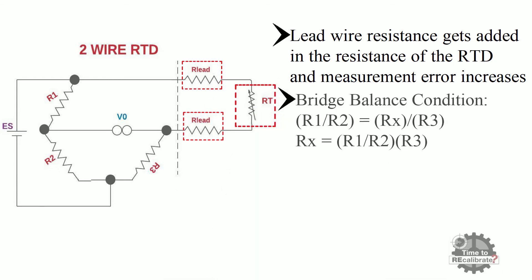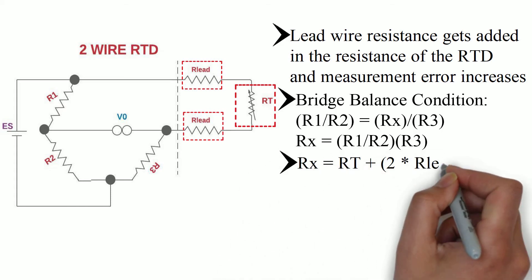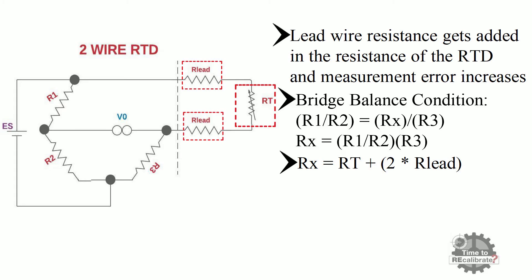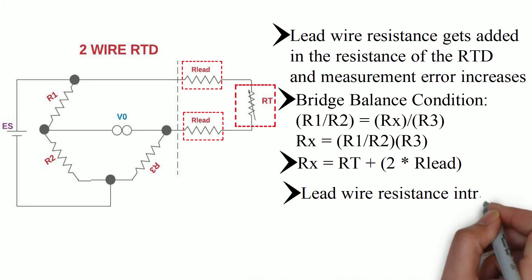As you can see, this is the equation of Wheatstone bridge when it is in balance condition. In this equation, Rx is the sum of RT and 2 lead wire resistances. So it can be clearly seen from the above equation that the lead resistance introduces error in measurement.